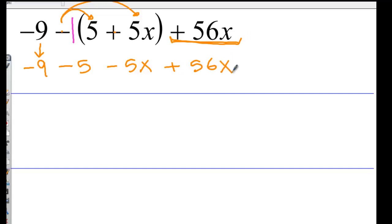Once you got rid of the parenthesis, it will not be there anymore. Next, you are looking for the same terms. This is a constant. It has no letter, it has no variable. It is another constant. Those are our two constants, so we're going to combine them. Negative 9 minus 5, that will give you negative 14.